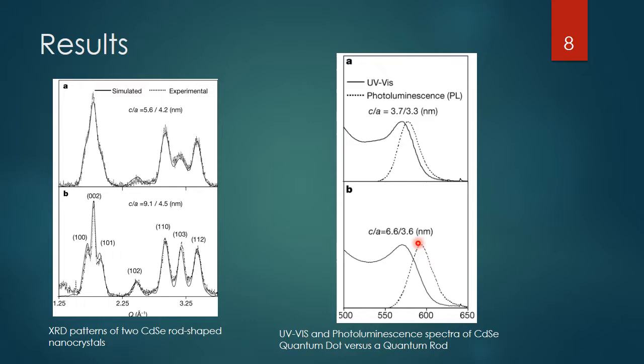The splitting between UV absorption and photoluminescence emission is not very much in the top spectrum, compared to the bottom one where you're seeing a very big difference between what wavelengths of light it absorbs versus emits. This could be useful in LEDs, which have a problem with recombination of electrons. The splitting between absorption and emission could help with the recombination that needs to occur for LEDs to work.